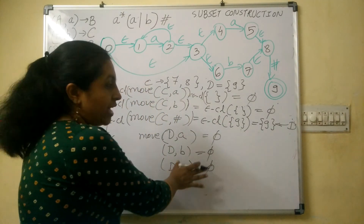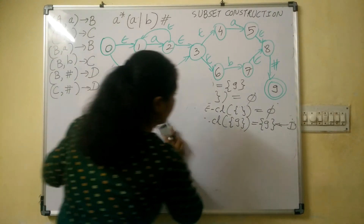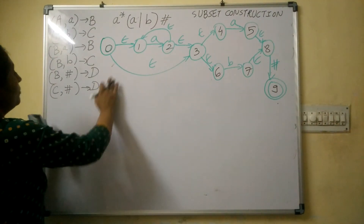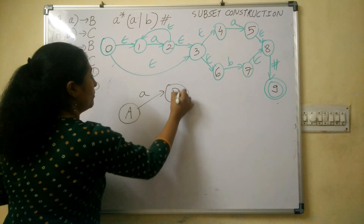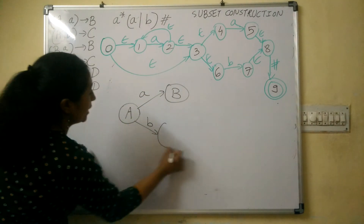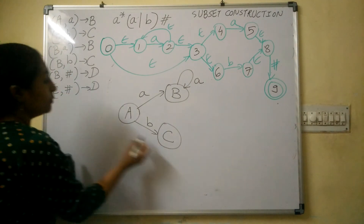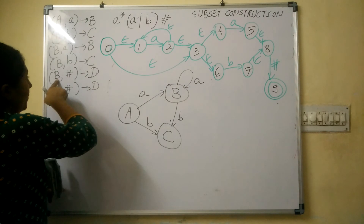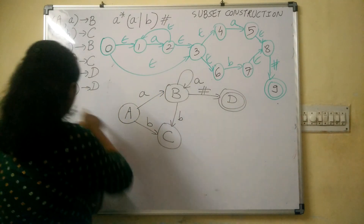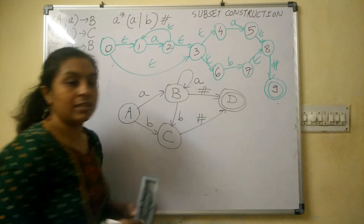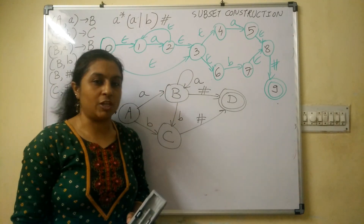Now let us draw the DFA from this information. Starting from A: on input 'a' it goes to state B; on input 'b' it goes to state C. From B: on input 'a' it remains in state B; on input 'b' it goes to C; on input '#' it goes to state D, which is always an accepting state. From C: on input '#' it goes to state D. This is the equivalent DFA for the given NFA using the subset construction method. Thank you.